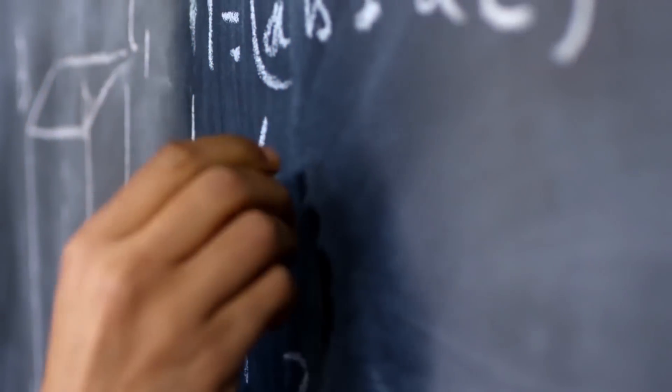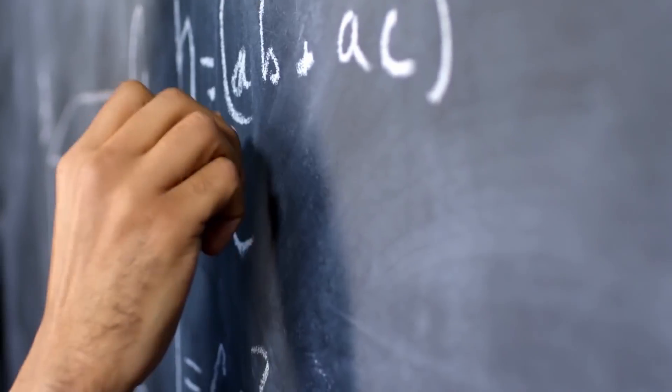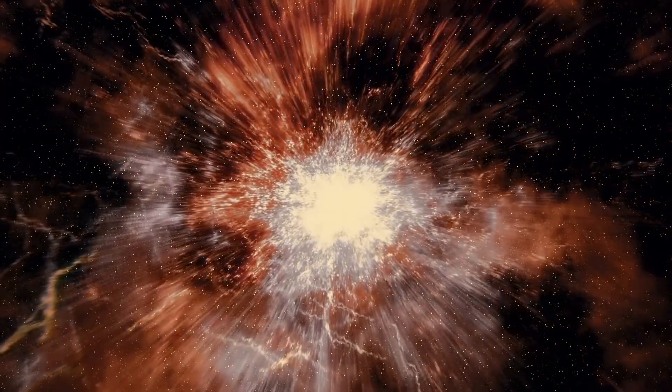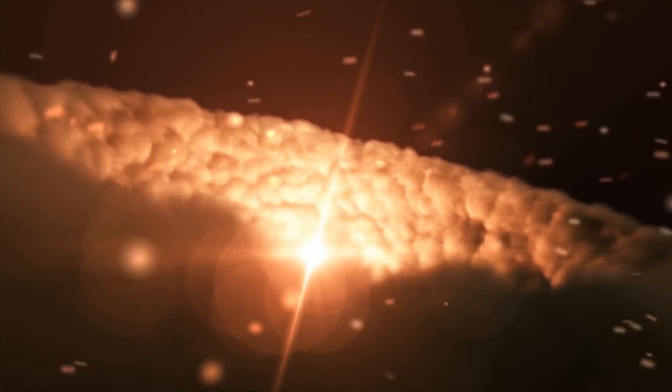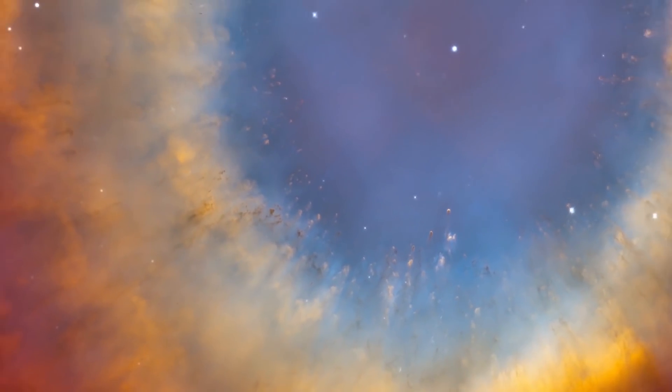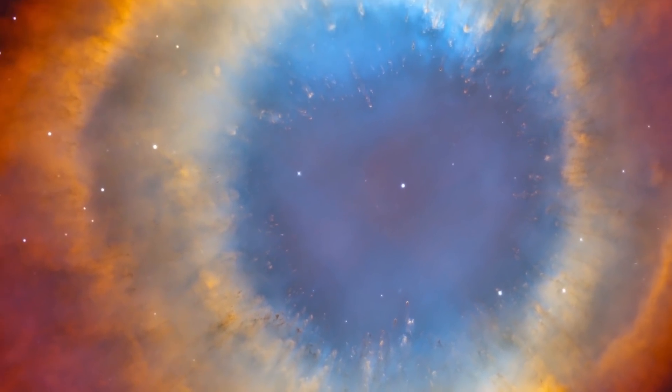According to one theory, the formation of the hourglass shape is produced by the expansion of a fast stellar wind within a slowly expanding cloud, which is more dense near its equator than its poles. Whatever is causing it, the nebula looks downright haunting.